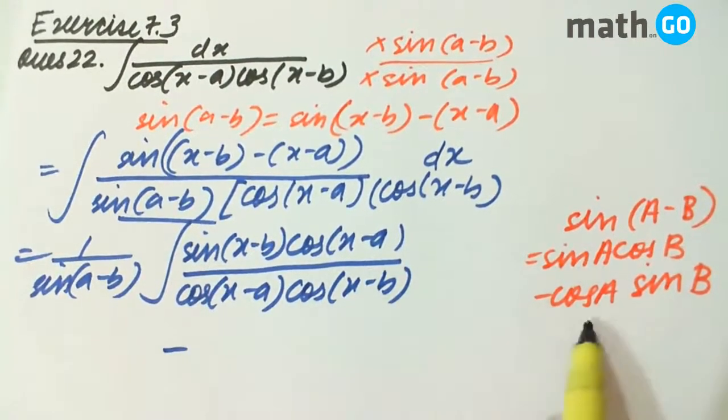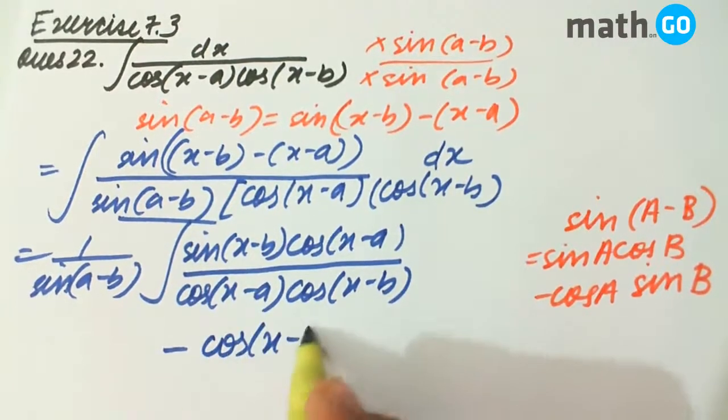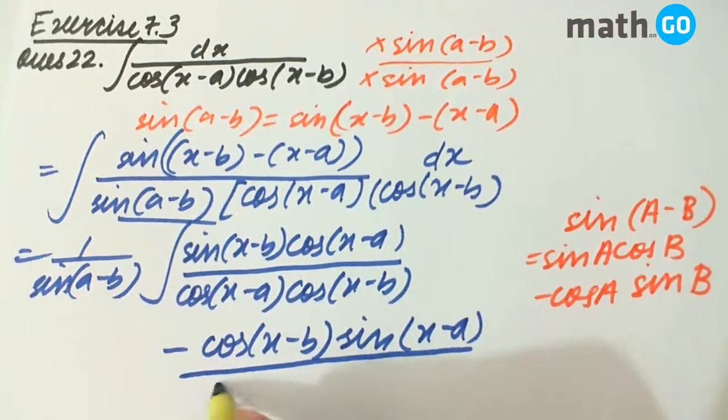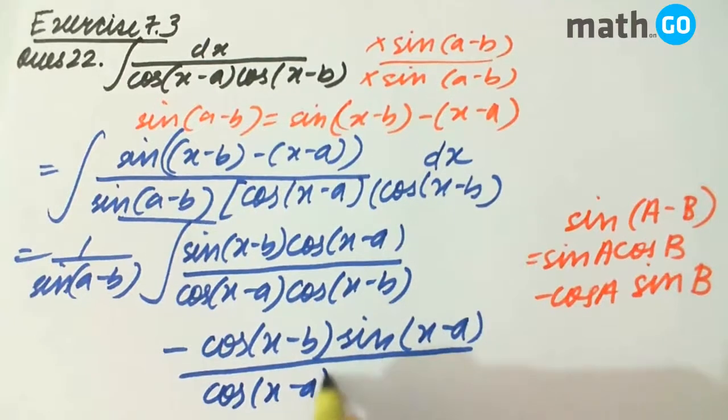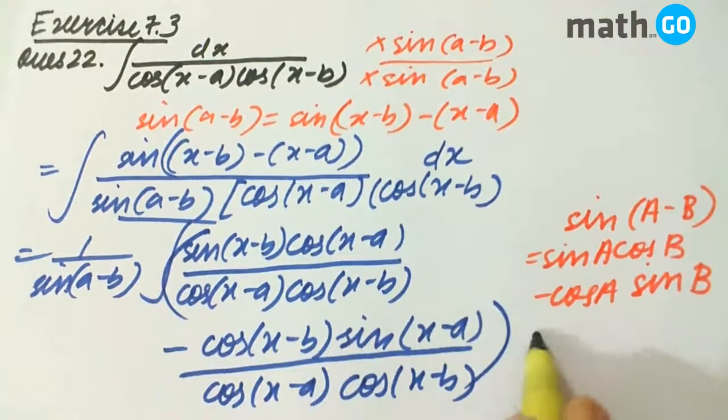Minus cos(x-b) sin(x-a) upon cos(x-a) into cos(x-b), completing the integral.